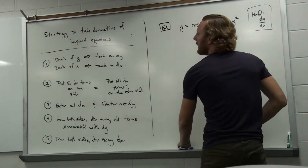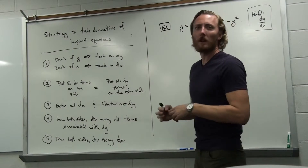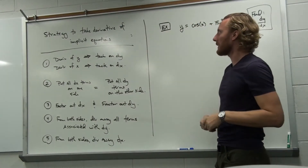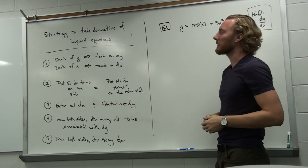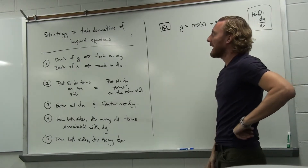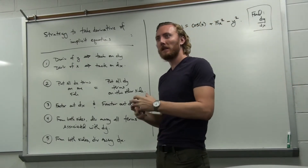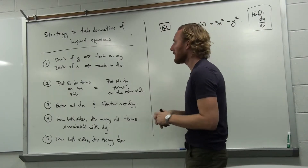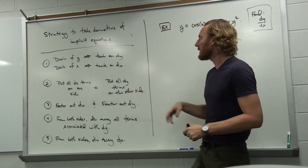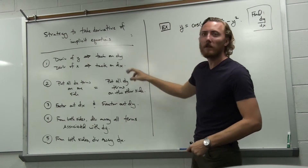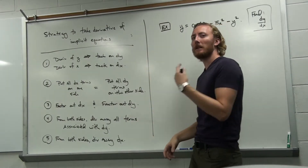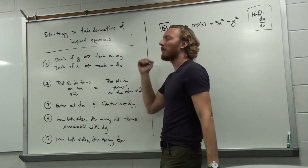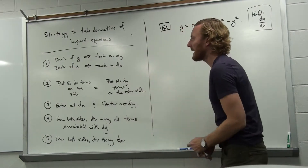In the last video, we developed a strategy that allowed us to take the derivative of equations that are not expressed explicitly — equations that are expressed implicitly. The way that we did it was, as we took the derivative, any time we took the derivative of y, we tacked on a dy. Any time we took the derivative of an x, we tacked on a dx.